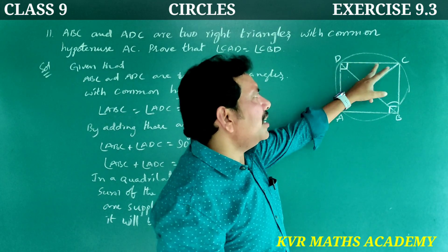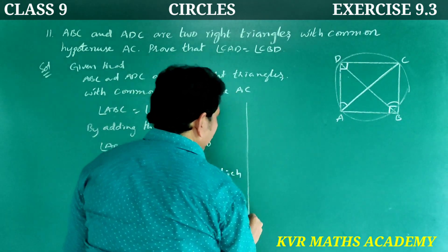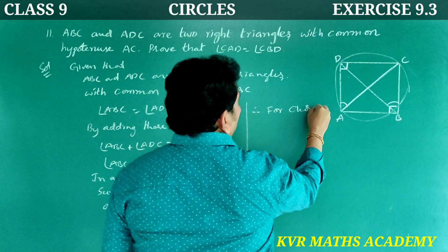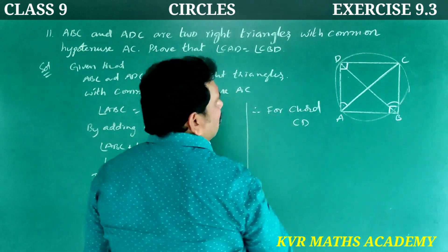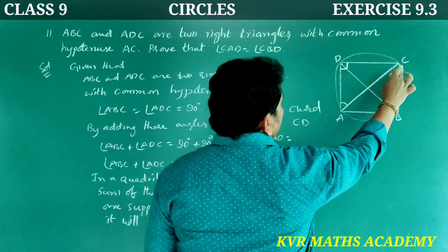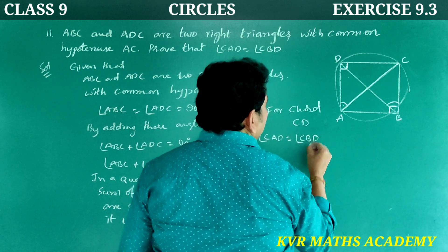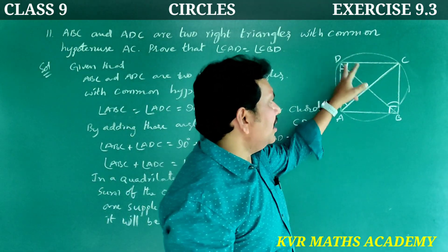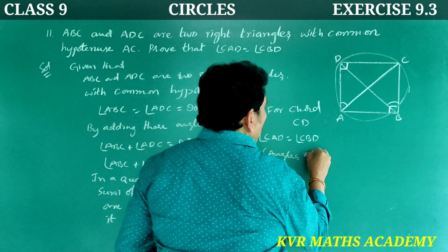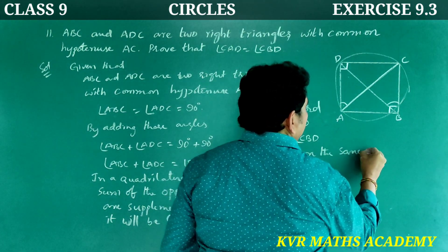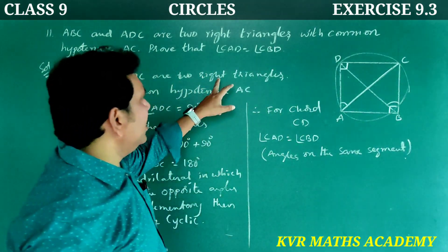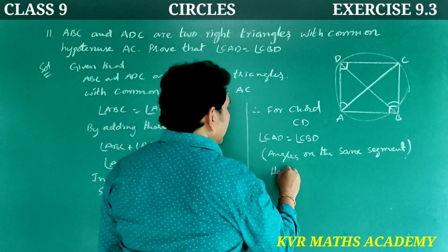CD is the chord. Therefore, for chord CD, angle CAD is equal to angle CBD — angles on the same segment are equal. Hence angle CAD is equal to angle CBD. Hence proved.